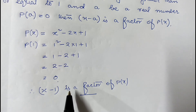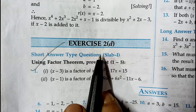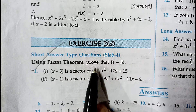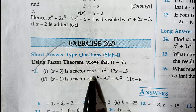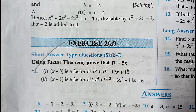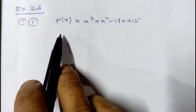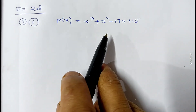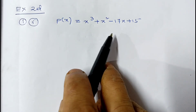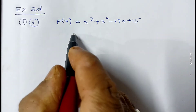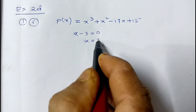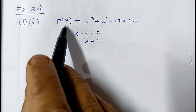Now let me show sums of Exercise 2D. The first question is: using the factor theorem, prove that x minus 3 is a factor of x cubed plus x squared minus 17x plus 15. The polynomial is x cubed plus x squared minus 17x plus 15, and we have to check whether x minus 3 is a factor. So we write x minus 3 equals 0, which means x equals 3.